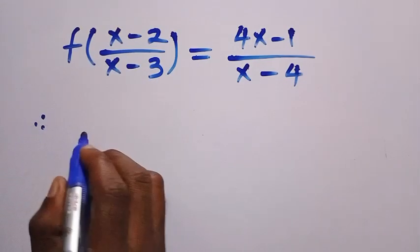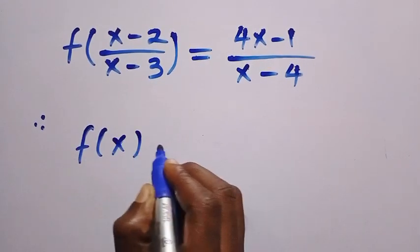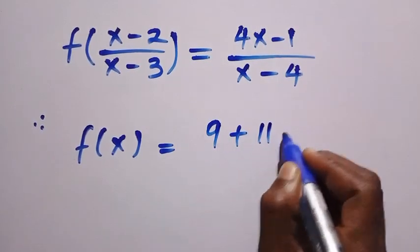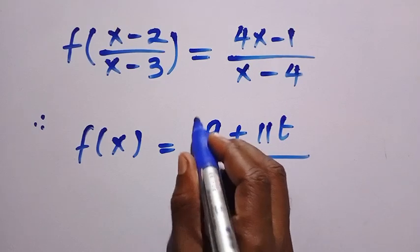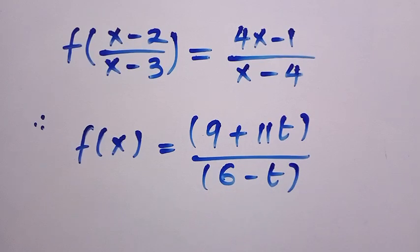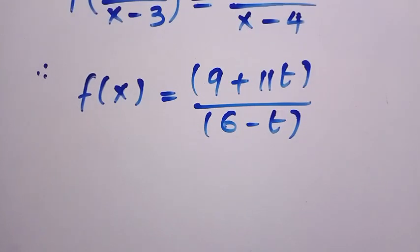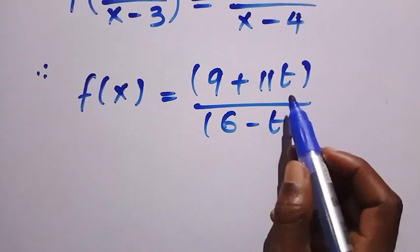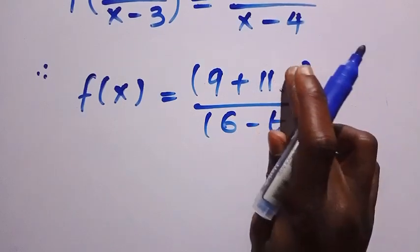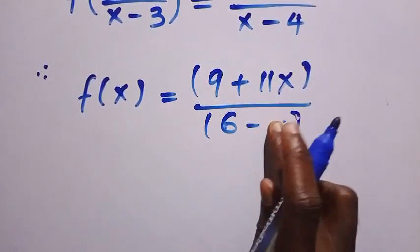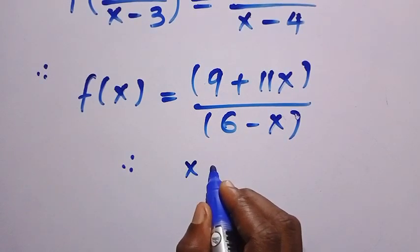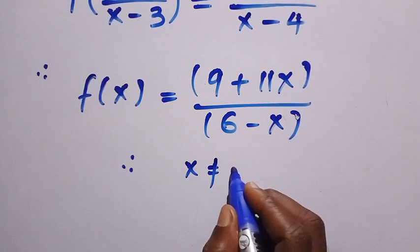Therefore, our f of t is 9 plus 11t divided by 6 minus t. Since we are dealing with f of x, we replace t with x in both places. So f of x equals 9 plus 11x divided by 6 minus x, where x is not equal to 6.